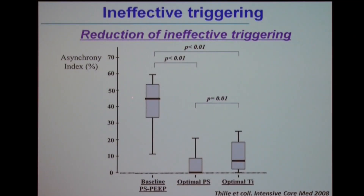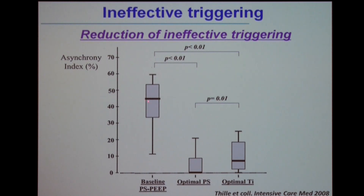Here is a patient with a high asynchrony index, with about 45% of cycles showing ineffective triggering. The authors first reduced the level of pressure support, which caused deflation of the patient and lowered hyperinflation. As a result, the proportion of ineffective triggering decreased. They could also reduce inspiratory time, which had the same consequence, since reducing inspiratory time reduces tidal volume and therefore reduces hyperinflation.